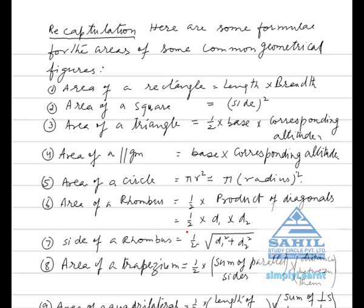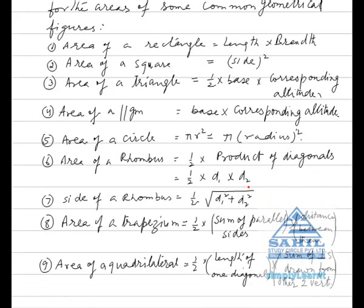Symbolically it can also be written as 1/2 into d1 into d2, where d1 and d2 stand for diagonals. Number 7: side of a rhombus is equal to 1/2 into square root of d1 squared plus d2 squared.